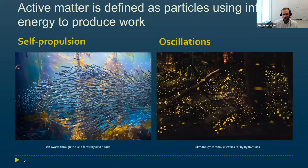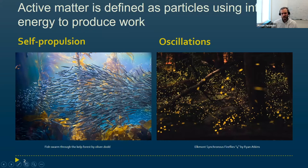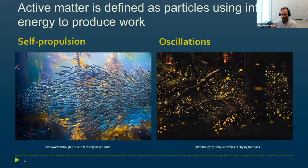However, we can extend this definition to other kinds of work produced from internal energy — for example, oscillations. Here is a photo of fireflies, a species that lives in the south of the United States. We know that fireflies produce light in an oscillatory motion, and this particular species is able to synchronize their flashing. To study these kinds of oscillators, people generally use synchronization models like the Kuramoto model. However, even though these bugs can move in space, nobody actually pays attention to their displacement in space — only synchronized oscillation is considered.